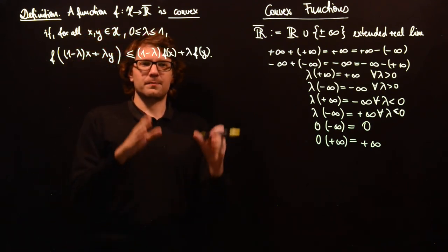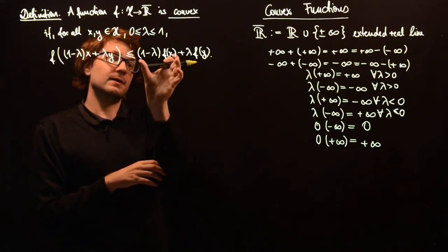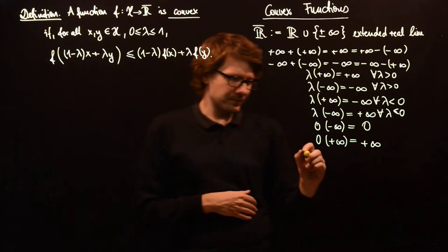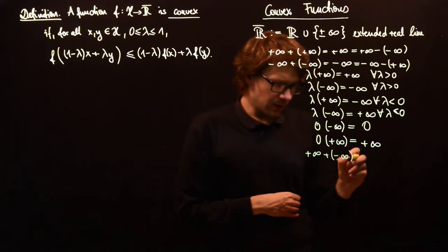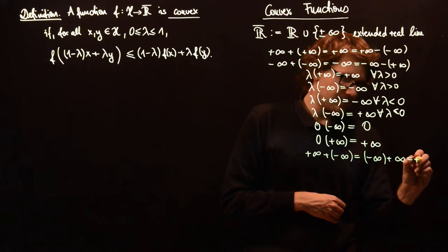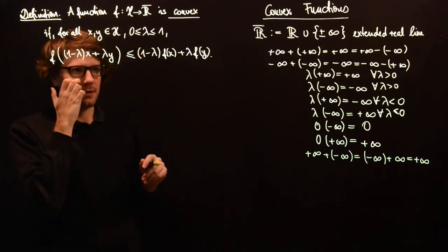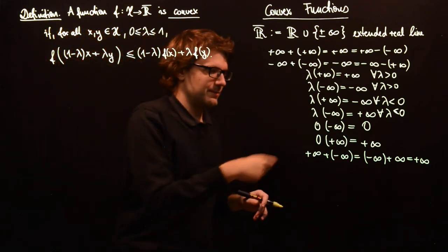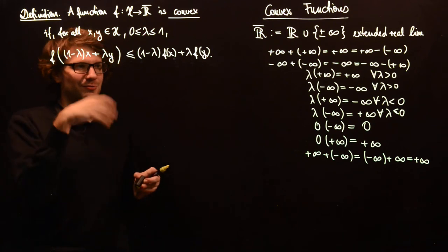We might also want to avoid problems with minus infinity when we add a value and minus infinity, because this would basically destroy everything in between. So we define plus infinity plus minus infinity, and likewise minus infinity plus plus infinity, to equal plus infinity. Otherwise, if we had plus infinity and minus infinity together, we still want the convexity inequality to hold. These conventions are just for the sake of well-definedness.